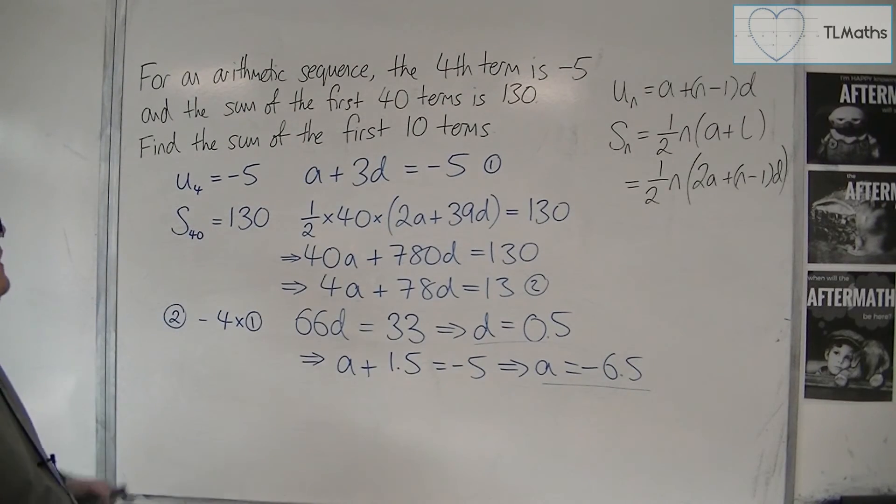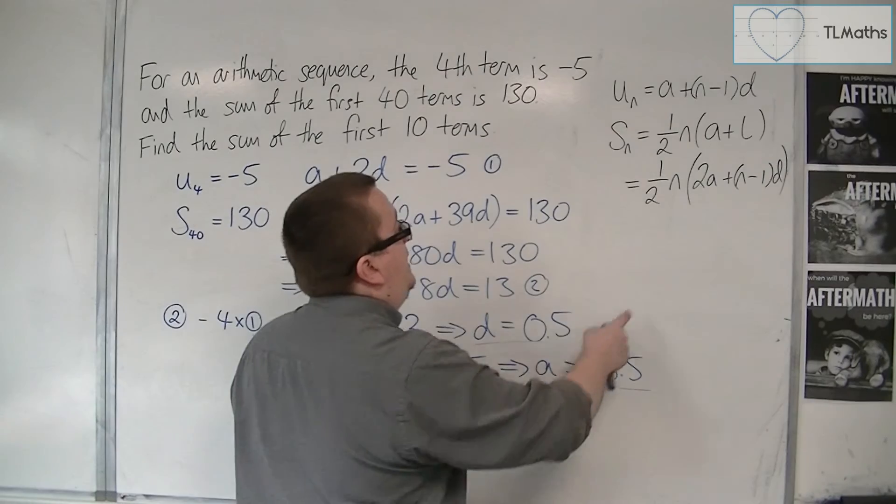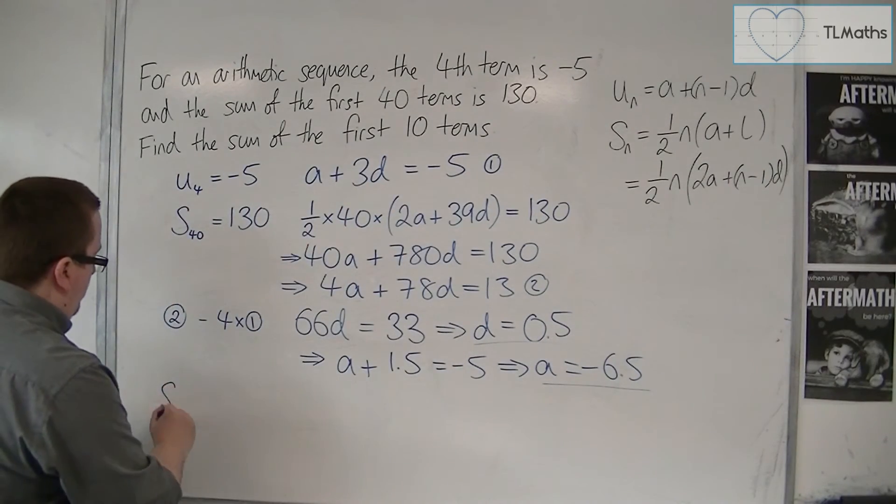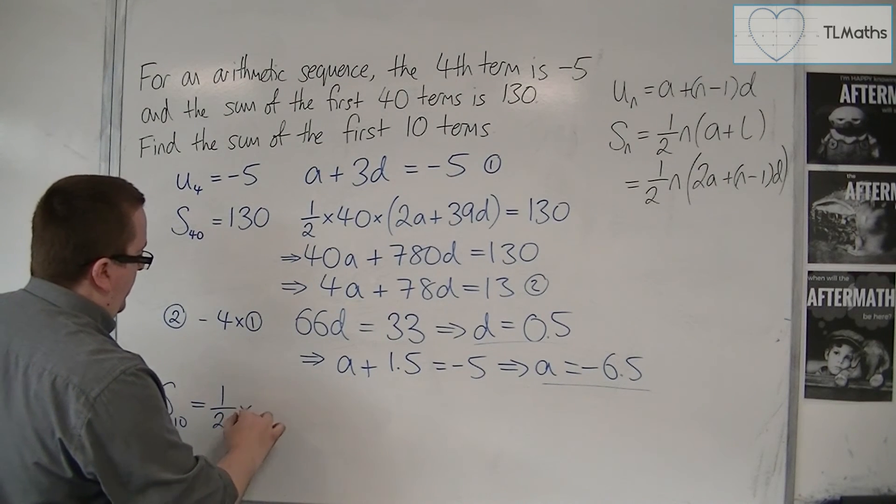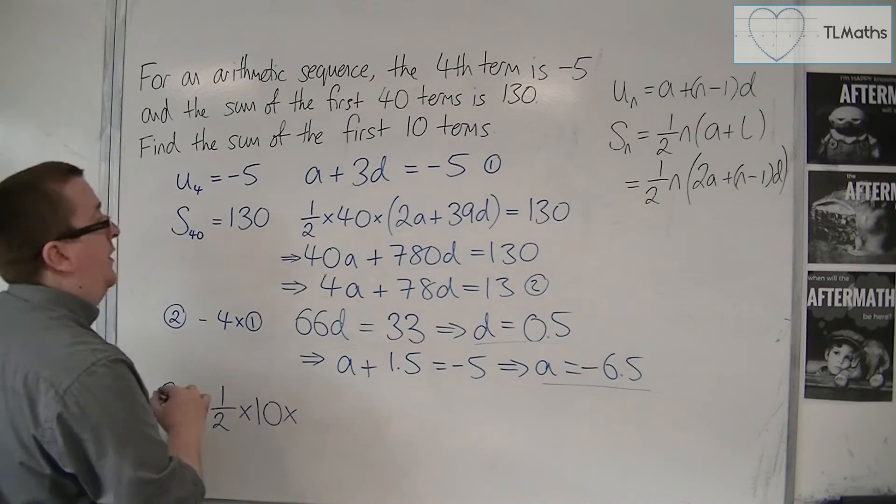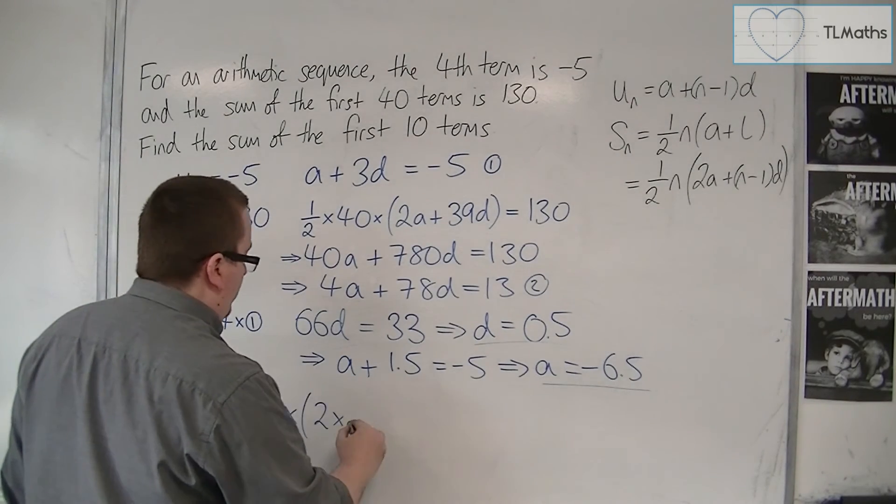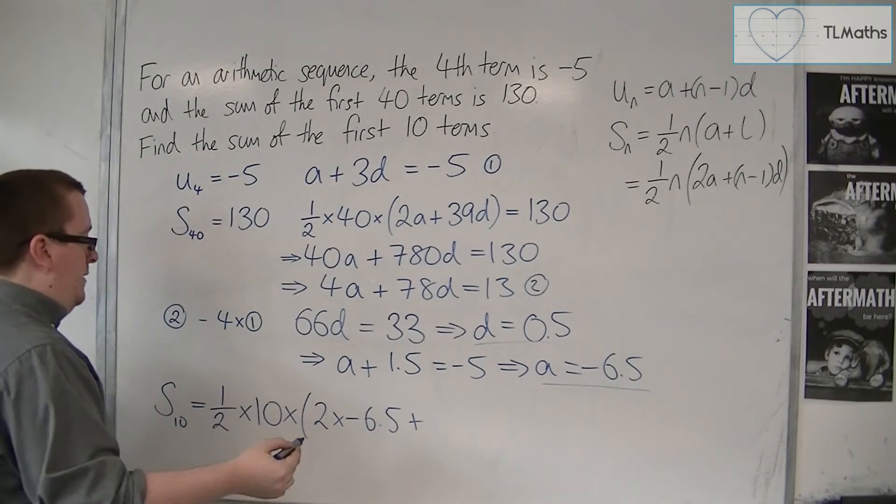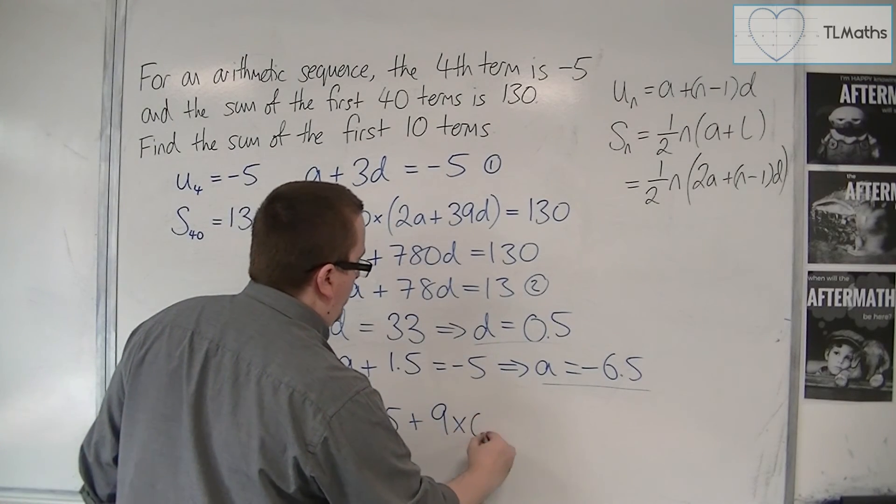Now, what I've been asked to do is find the sum of the first 10 terms. I have all the information I need to use that formula there. So the sum of the first 10 terms is equal to 1 half times n times 2a, so 2 lots of a, minus 6.5, plus n minus 1, so 9, times d, which is 0.5.